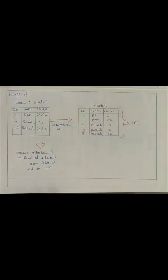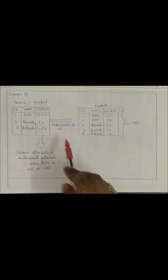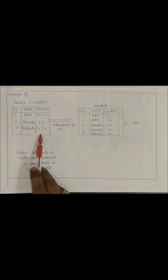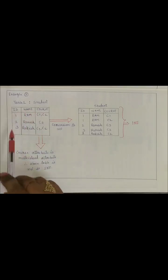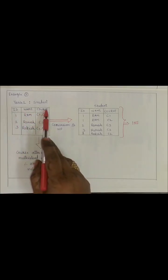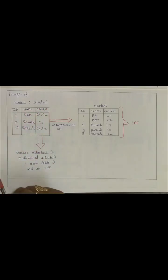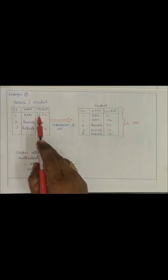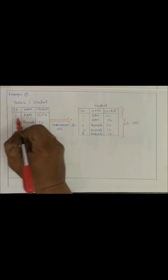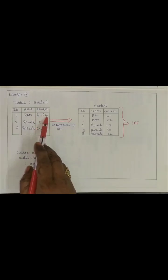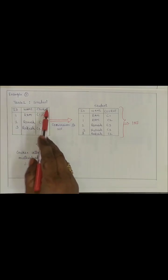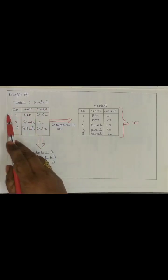Let us understand first NF with this example. Here you can see this is the student table, and it is having student ID, name, and course. You can see course is a multi-valued attribute. Since in this single tuple it is having two courses, C1 and C2, two values are present for this course attribute in a single tuple.